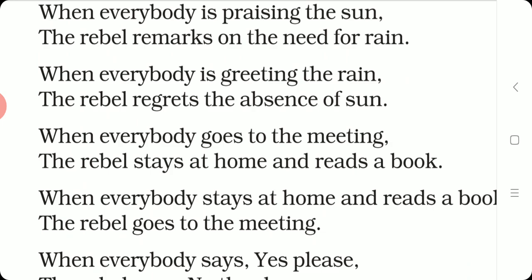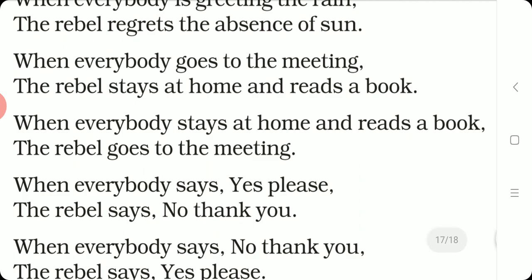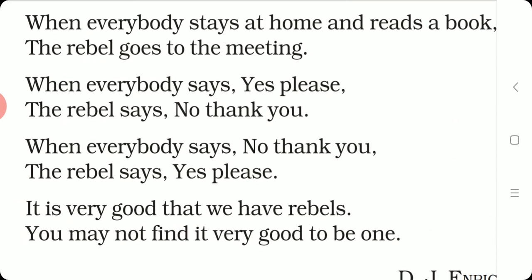When everybody goes to the meeting, the rebel stays at home and reads a book. When he is expected to go to the meeting, he will not go — he will simply stay at home and read a book. When everybody stays at home and reads a book, the rebel goes to the meeting. When everybody says yes please, the rebel says no thank you. When there is something very nice that everybody normally likes, they will say yes please, but the rebel will say no, I don't like it. When everybody says no thank you, the rebel says yes please. So, when everybody likes or dislikes something, he will go against it.